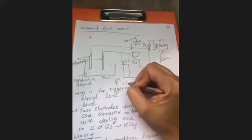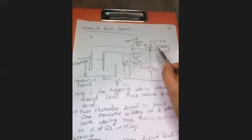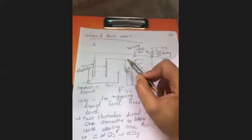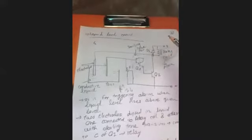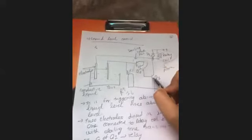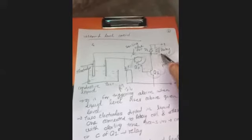SCR can also control liquid level. When the liquid level is low, the resistance is high, so the current is low and the relay does not energize. When the liquid level is high, resistance drops, current increases, and the relay energizes, activating the alarm.